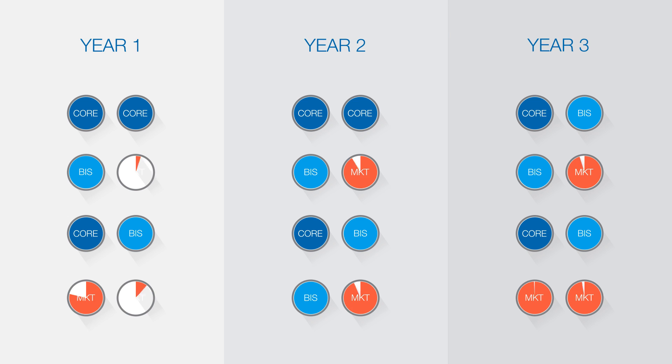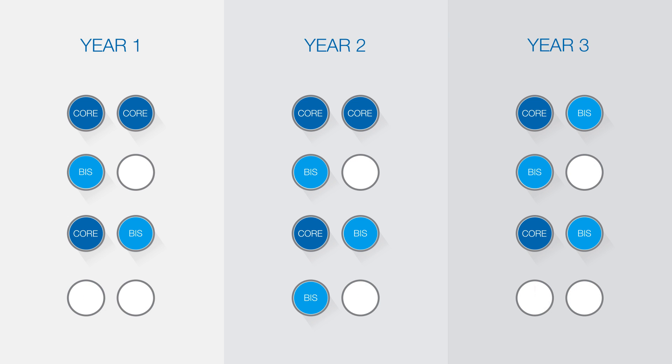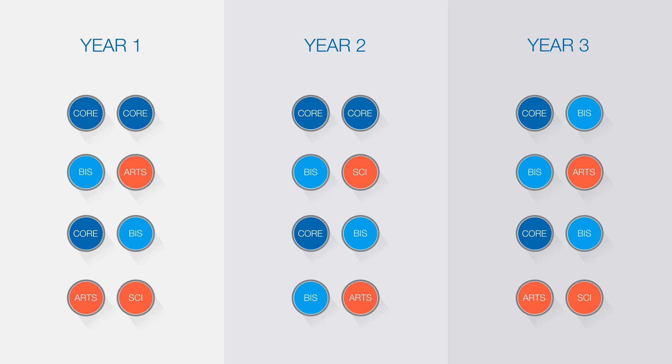Alternatively, you can use your electives to study different areas of interest to build a broad range of knowledge — for example, a range of units from arts and science.